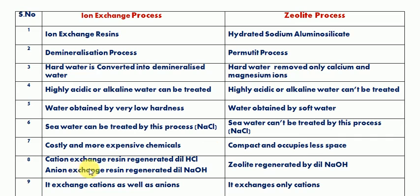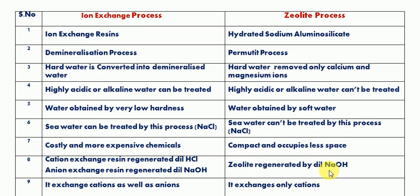In the ion exchange process, cationic exchange resins are used along with anionic exchange resins. Cationic exchange resins are regenerated using diluted hydrochloric acid, and anionic exchange resins are regenerated using diluted sodium hydroxide. But in the zeolite process, regeneration is done by diluted sodium chloride solution.